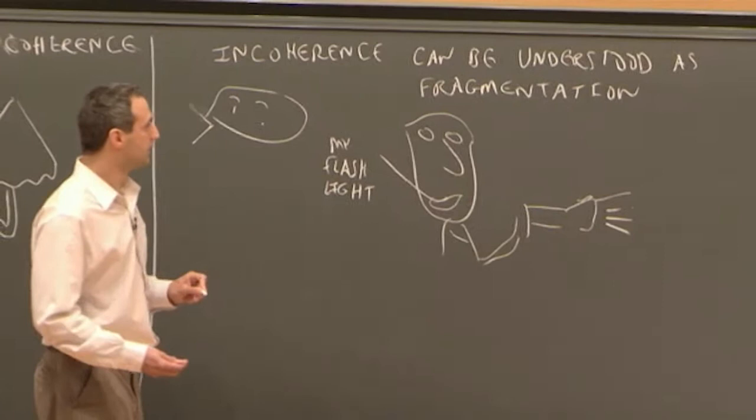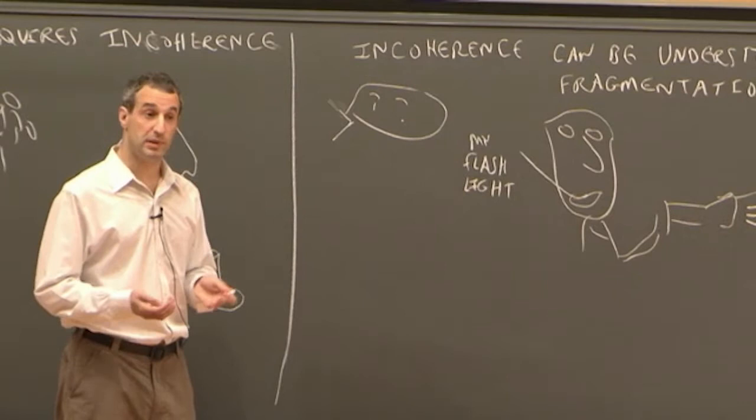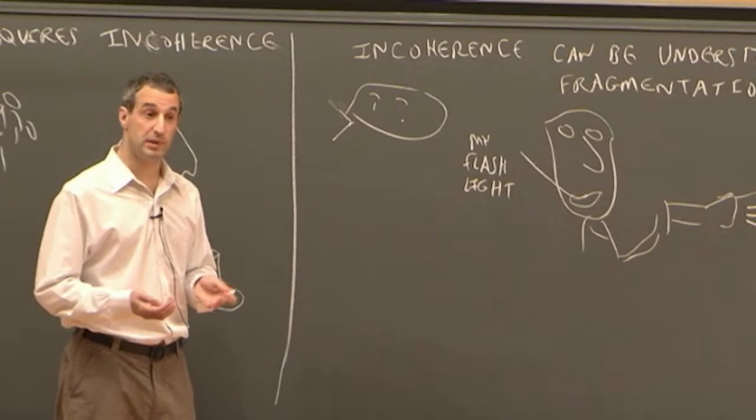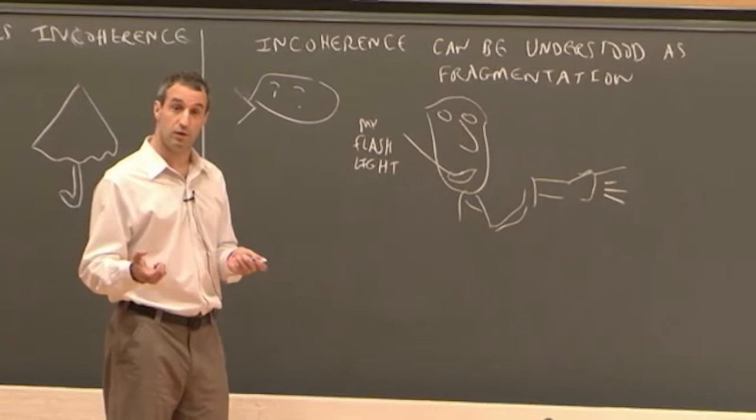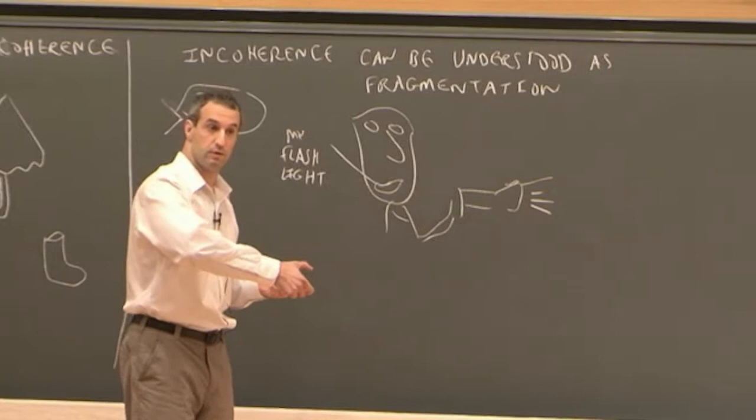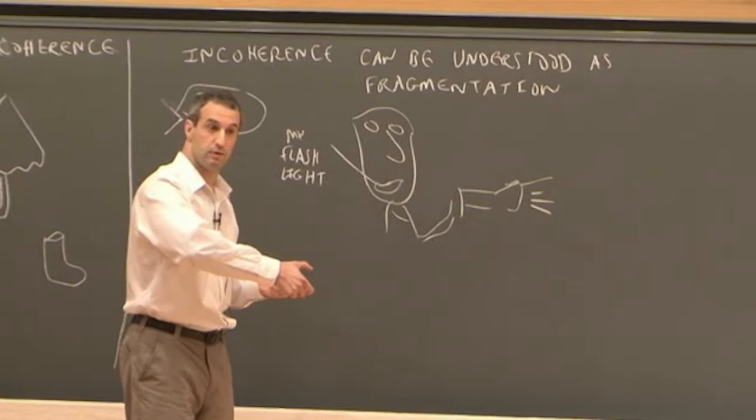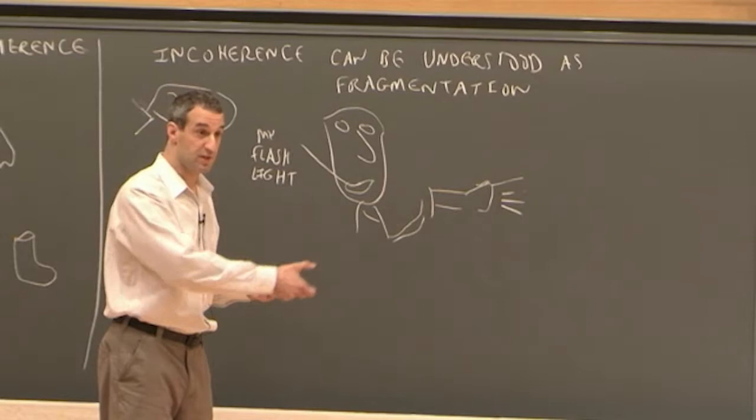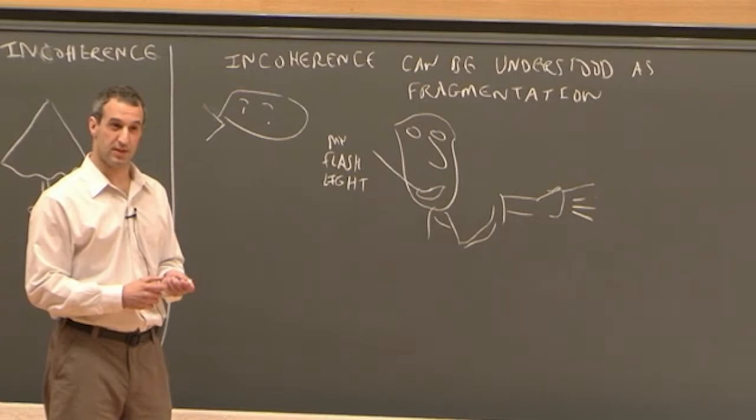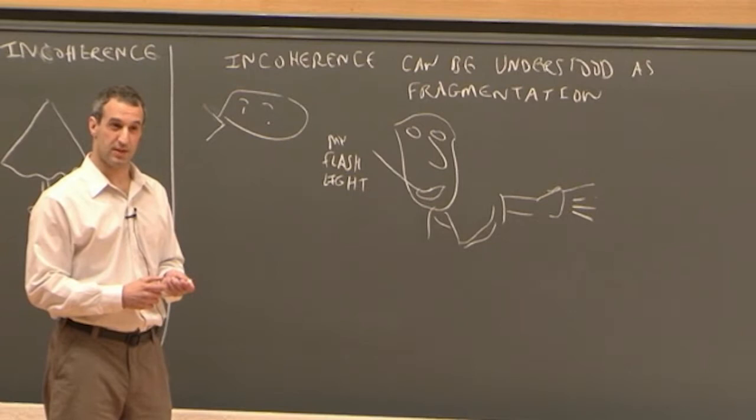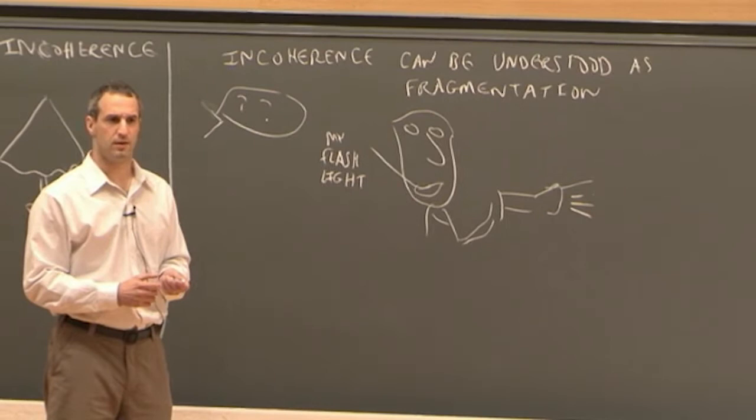Now, before Frank realizes what's going on, did he believe that he had his flashlight in his hand? Well, yes and no. In some respects, he believed that he did have his flashlight in his hand. For example, for the purposes of choosing how to move his arm, he believed that he had a flashlight in his hand. After all, he was moving his arm around in a way that only makes sense if you have a flashlight in your hand to shine on things. But other aspects of his dispositions only make sense if he didn't believe he had his flashlight in his hand.